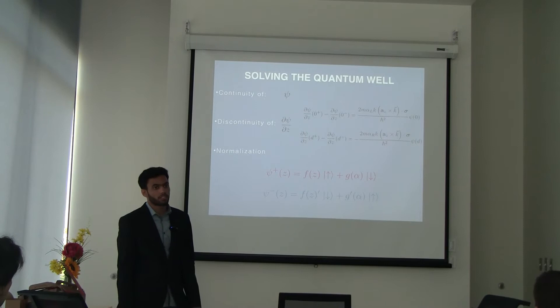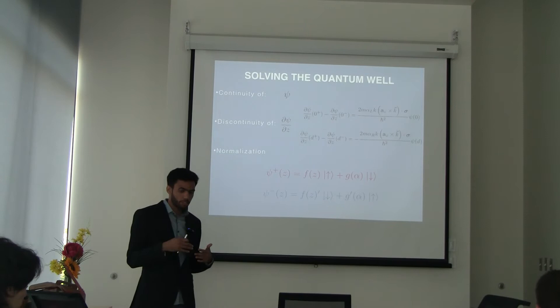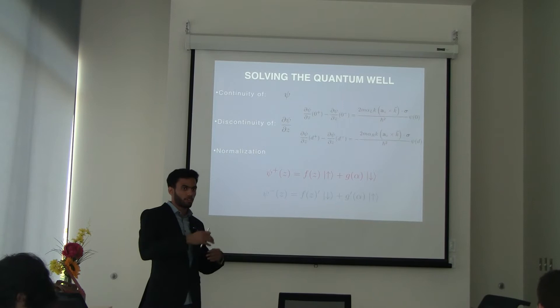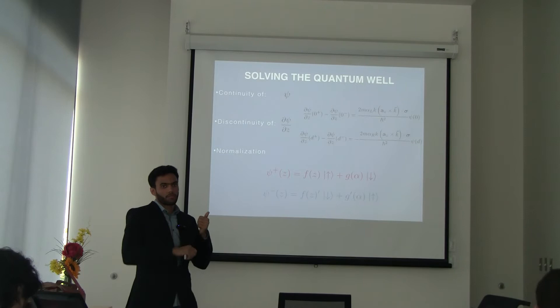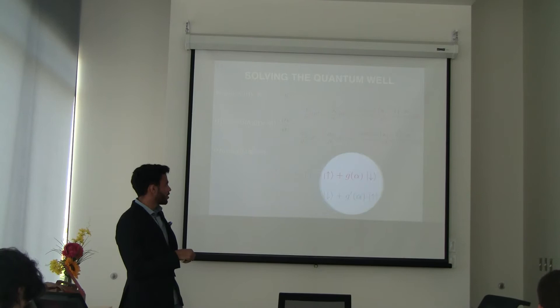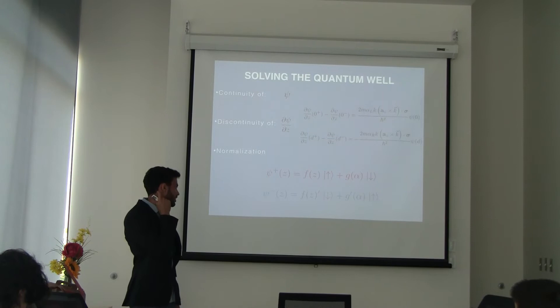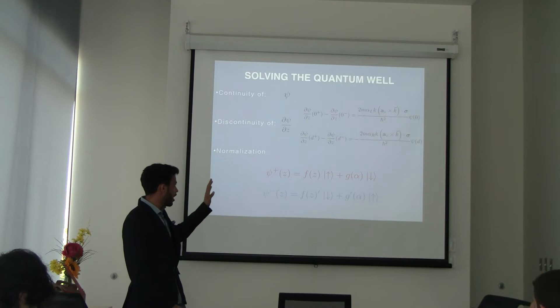Due to the spin-orbit coupling there is a mixing. Without spin-orbit coupling, spin-up and spin-down are decoupled — you could write the eigenstates as just spin-up or spin-down. But with spin-orbit coupling, you see this mixing, so now your eigenstates are not pure spin-up or down; rather, they are tilted. We refer to them as spin-plus and spin-minus. They are mainly either spin-up or down with an additional contribution from the spin-orbit coupling. Intuitively, as the spin-orbit coupling becomes very small, that correction function G also becomes very small.